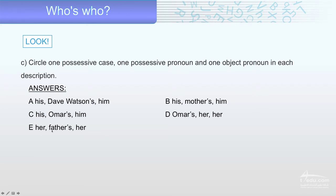For description D: the first 'her' is a possessive pronoun, then we have the possessive case, and the second 'her' or 'him' is the object pronoun. So you have 'his mother's' as possessive case, 'her' as possessive pronoun, and 'him' or 'her' as object pronoun. Omar's is the possessive case.